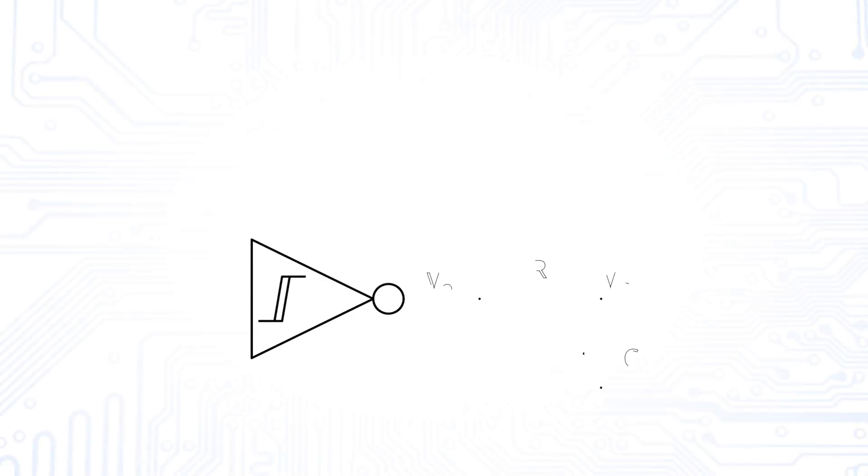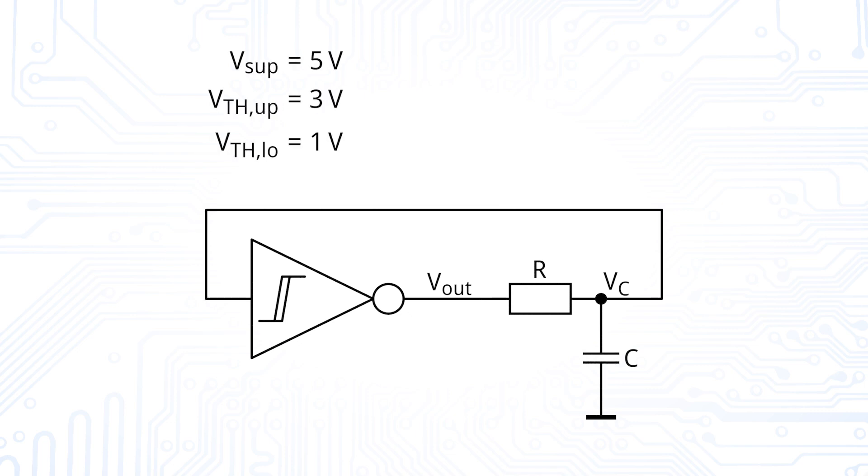Let us try to calculate an example. We have a supply voltage of 5V and threshold voltages of the Schmitt trigger at 1 and 3V. The resistance is given by R equals 1 kilo-ohm and C equals 1 microfarad.